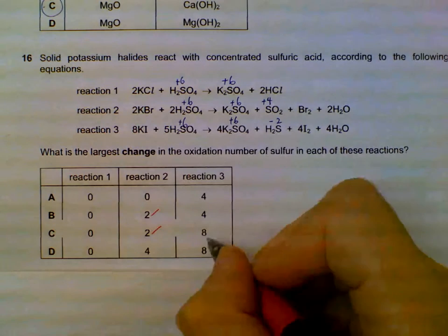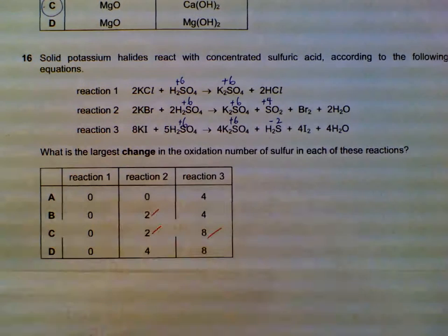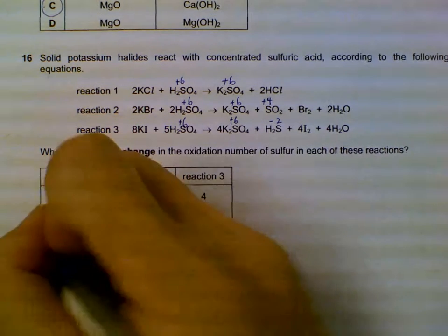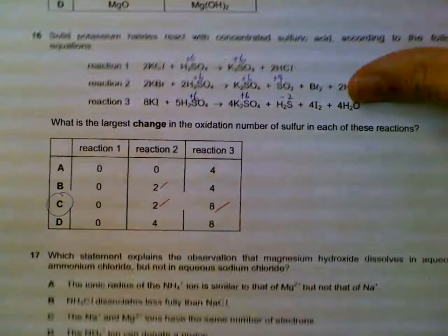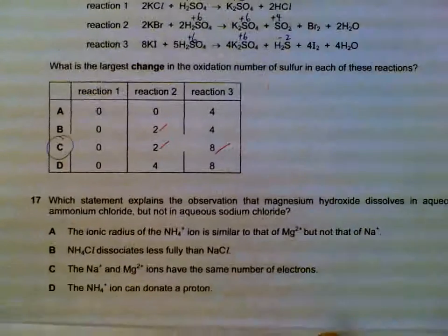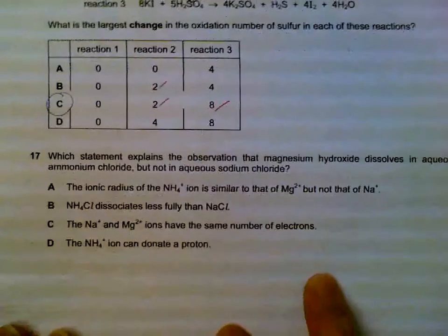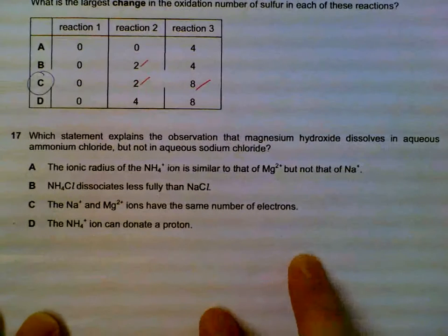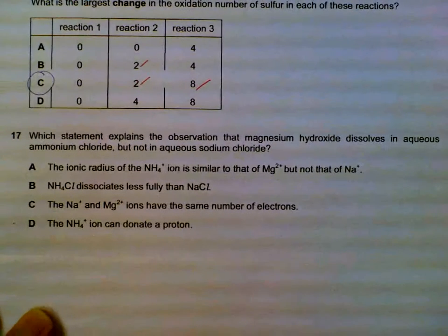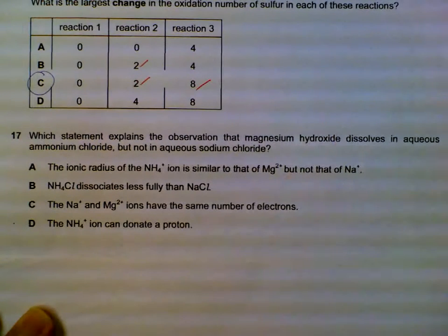In reaction 3, the oxidation number drops from +6 to -2, so that's a change of 8 units. That is the largest change for sulfur.